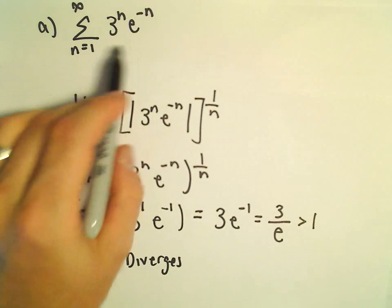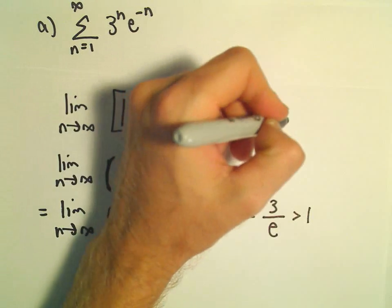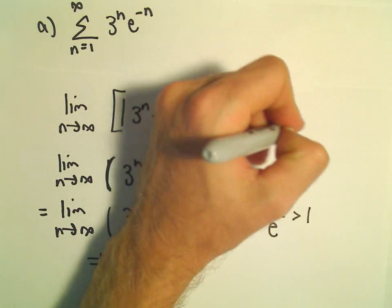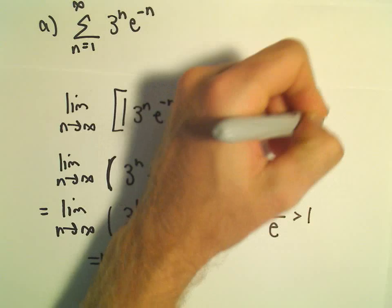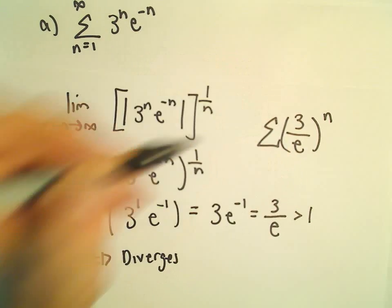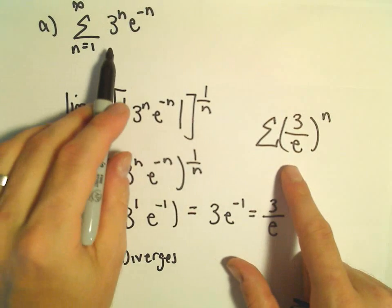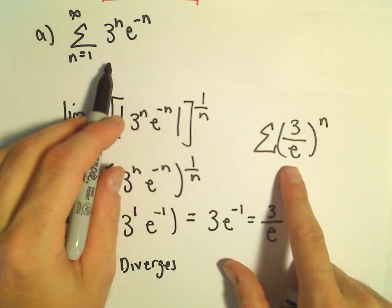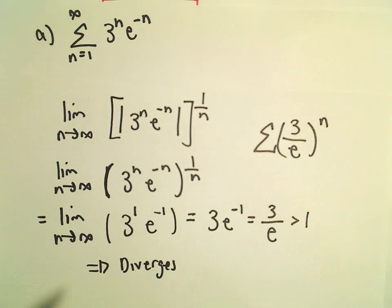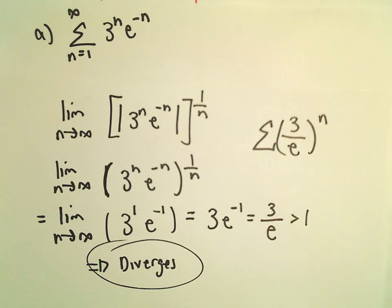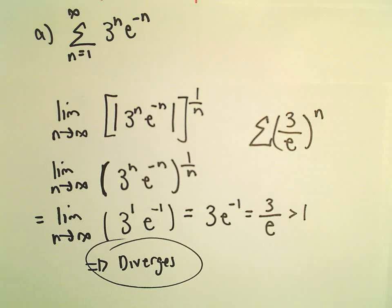And again, you could have recognized that at the very beginning by rewriting 3 to the n over e to the negative n as 3 over e all raised to the n power. So you could have also recognized the original series as being a geometric series where the r value is not between negative 1 and positive 1. So in this case, our series will diverge.